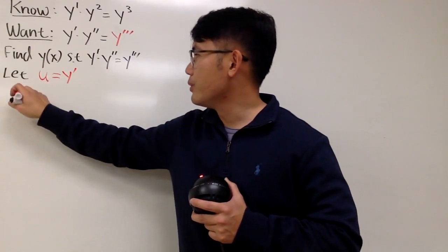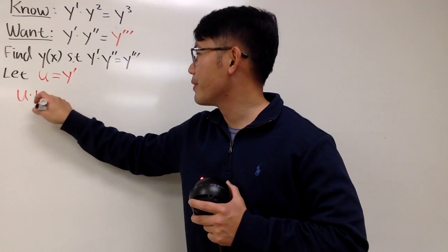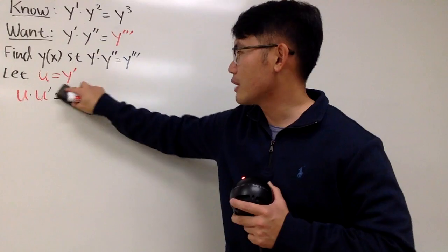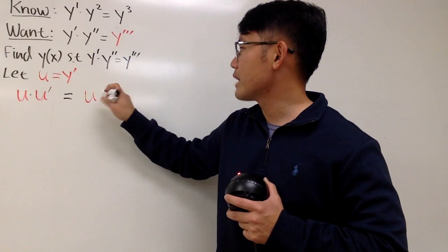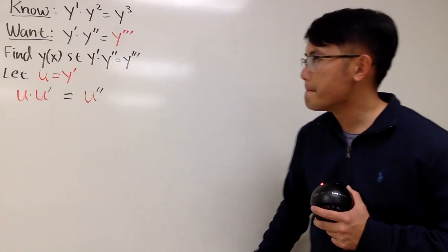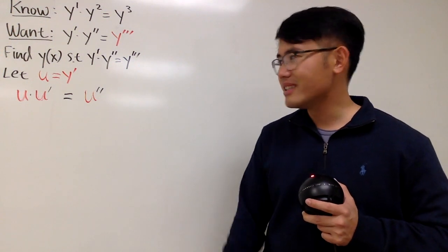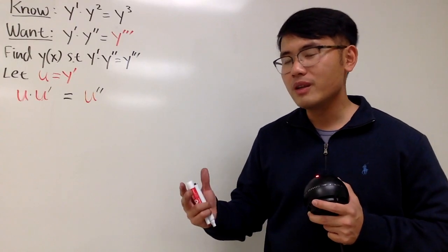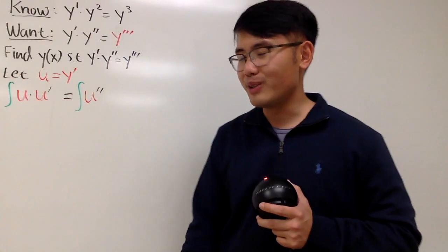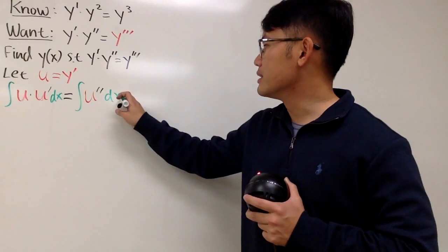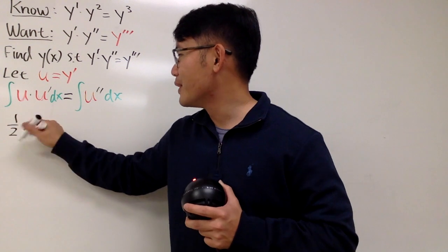So we have u times u prime on the left. And y triple prime, differentiating twice gives u double prime on the right. Very nice. Now, u times u prime — doesn't this remind you of the chain rule? You have to think about the derivative of what function will end up being u times its derivative. We can just integrate both sides with respect to x, because u is a function of x. This right here is going to be just 1 half u squared.